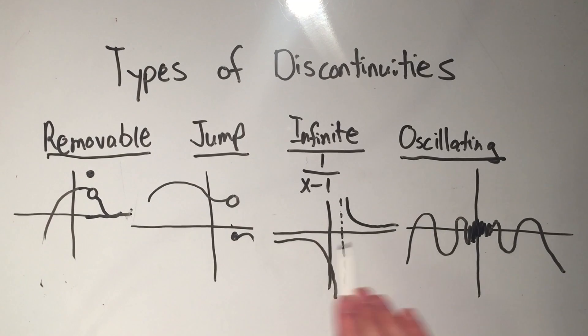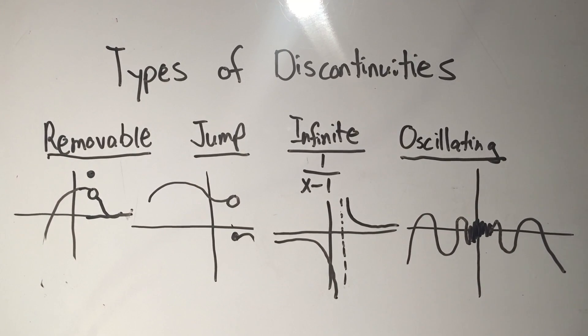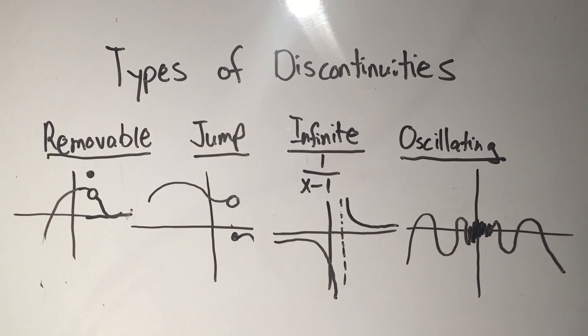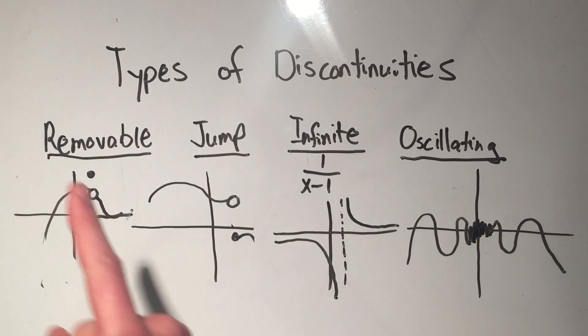But these are the four types of discontinuities that you're pretty much required to know, at least for your first test. If your professor asks you to state all the different types, boom, boom, boom, boom. And you can draw four graphs just like this one. And you should pretty much get full credit for that.